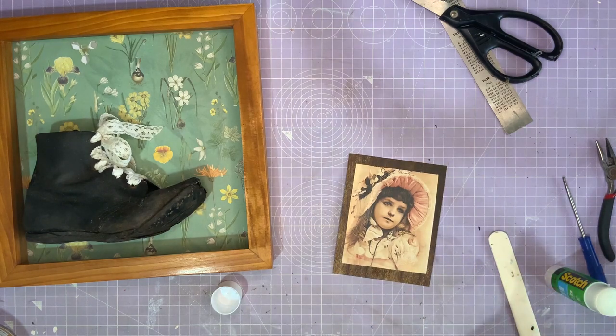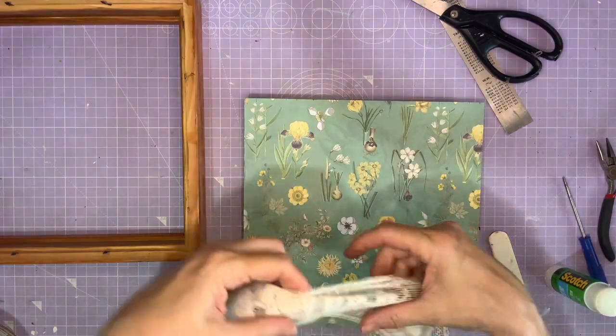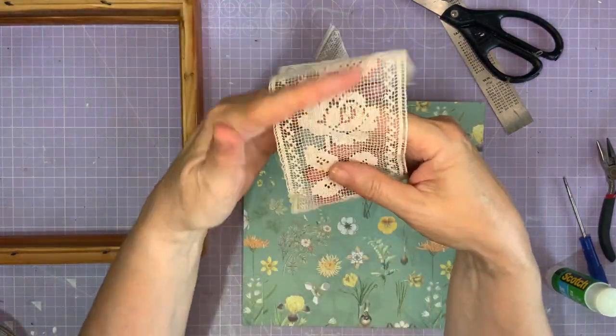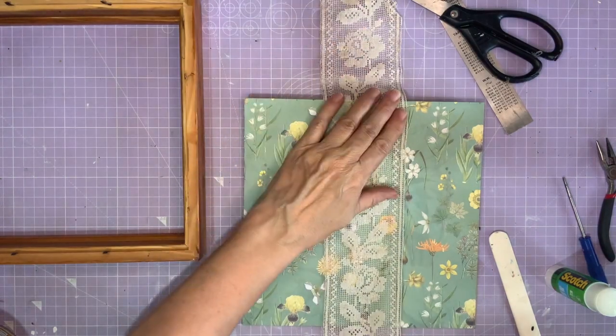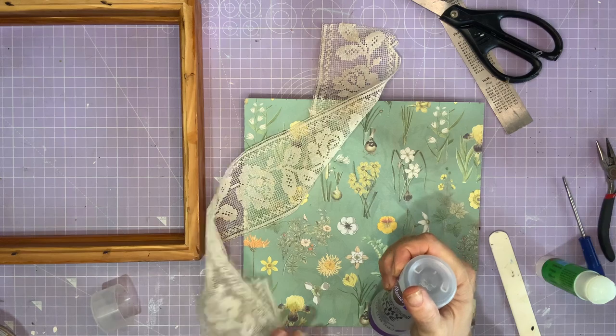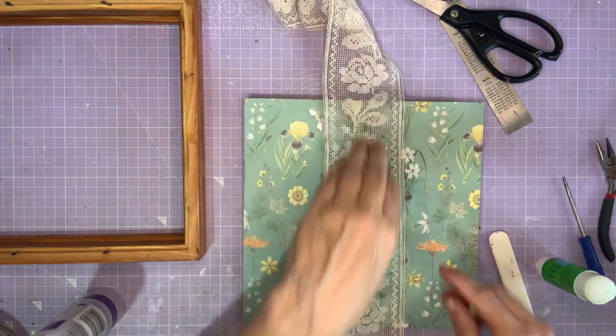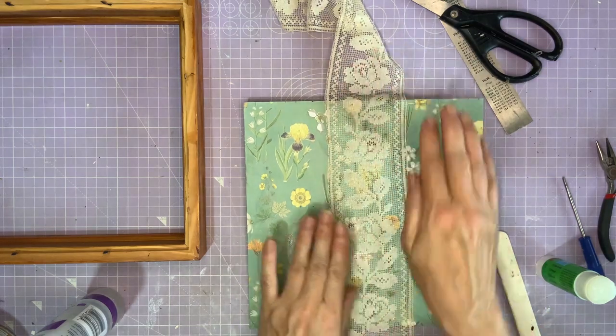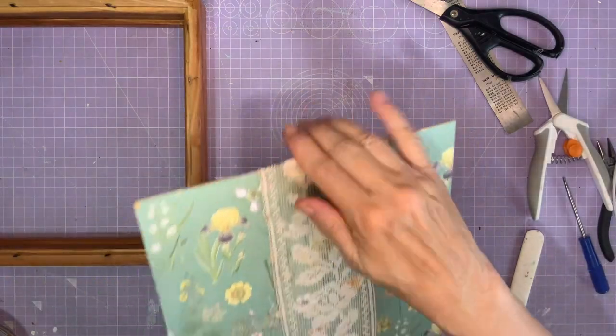Another change of plan. You know me and my change of plans. I've got this gorgeous antique lace. Look at that. Absolutely stunning. And I'm thinking of putting a run of that right down the centre there. I think I'll use some Aileen's Tacky Glue for this. This lace has got some stains on it, but I don't mind. I think that fits perfectly with the look of this picture.